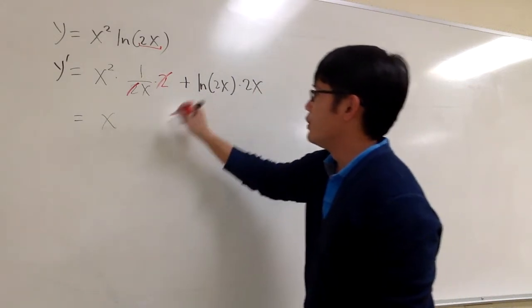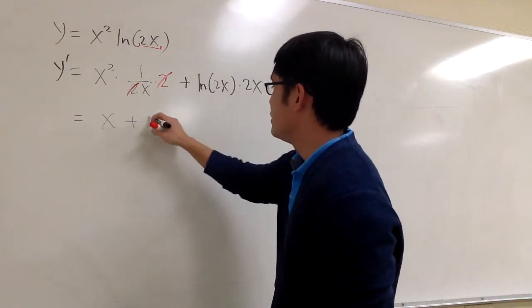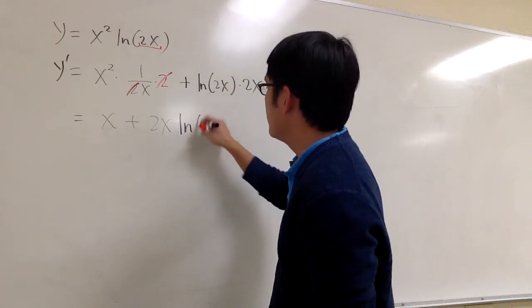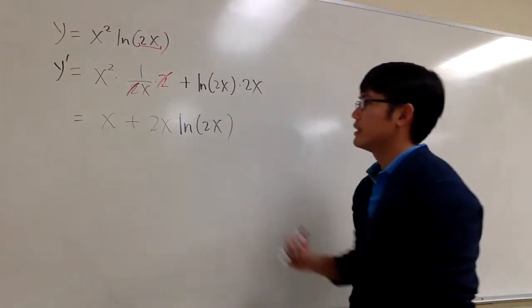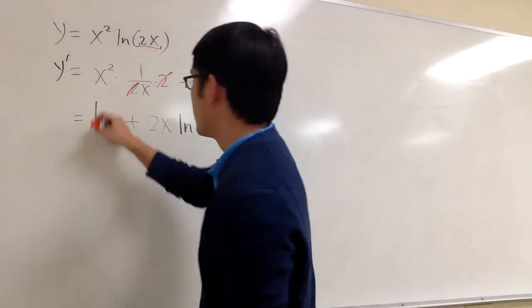Right here, we are going to add, let's put the 2x in the front, and then we have ln of 2x, like this. And this is the first derivative.